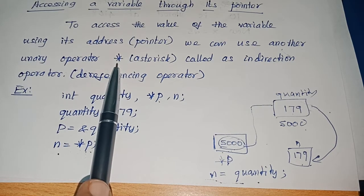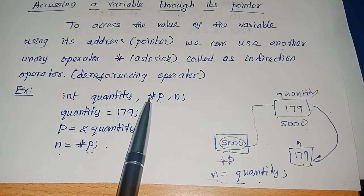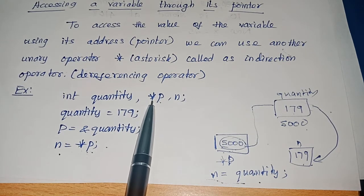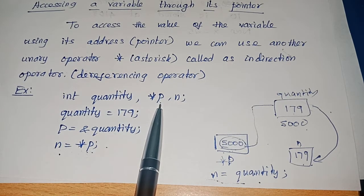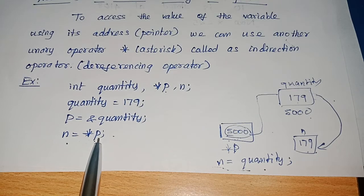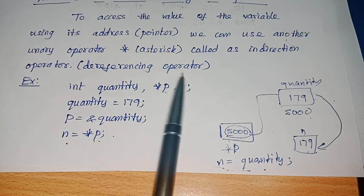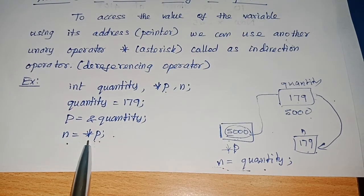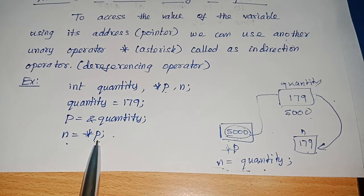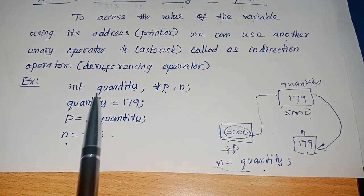The dereferencing operator, otherwise called the indirection operator, is nothing but once again an asterisk. You should not get confused with these two asterisks — both of them are asterisks. At the point of declaration, the asterisk informs the compiler that p is a pointer variable. But whenever there is a star in front of p other than at the declaration point, it will be called the dereferencing operator.